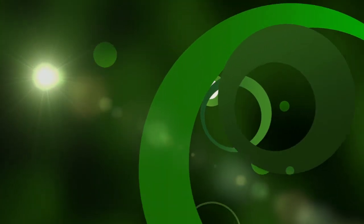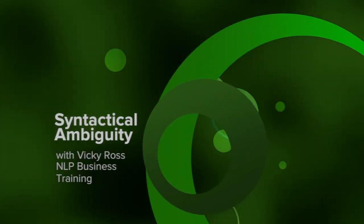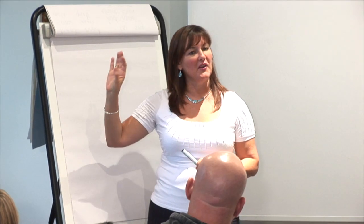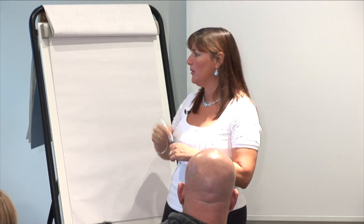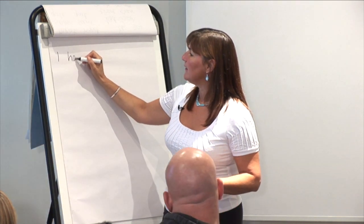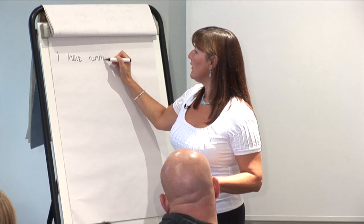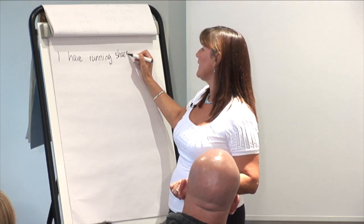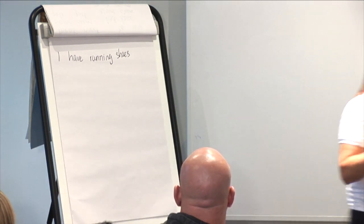What happens with syntactical ambiguity is that we take the verb, we place it before the noun, and we add '-ing'. So, who can see the ambiguity there?